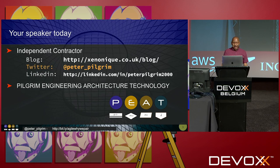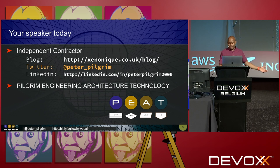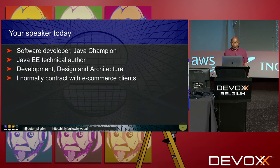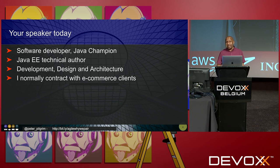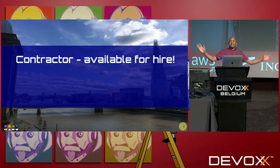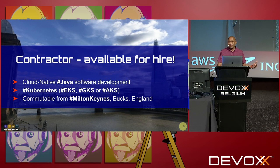I am an independent contractor. I have a LinkedIn, a Twitter and a blog, and I have an independent limited company in the UK called Pete Pilgrim Engineering Architecture Technology Limited. I'm a Java champion and a software developer for a long time. I've written a few books. I develop, design, and architect microservices for banks and retail clients. I'm available for hire — I just finished a contract last week.